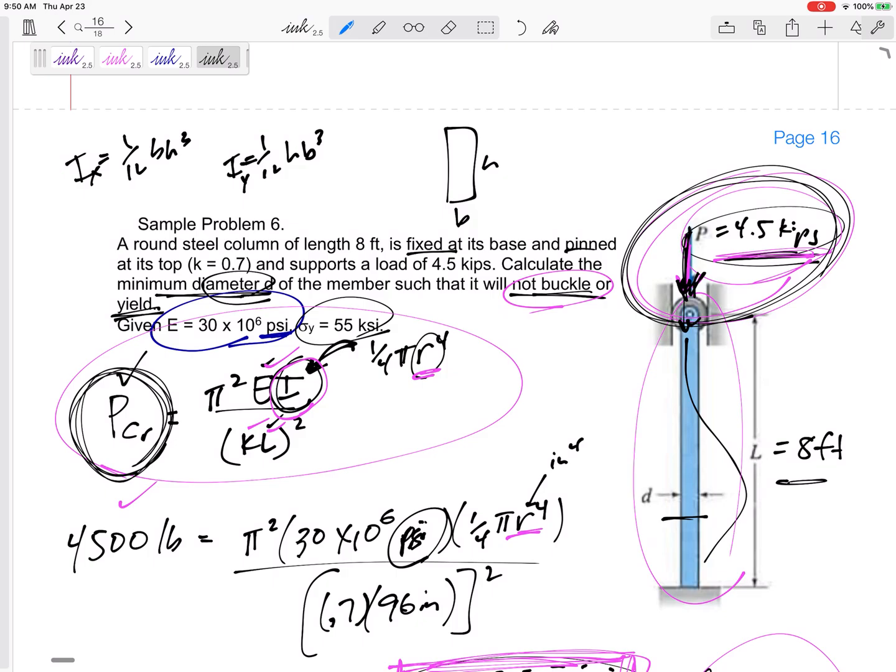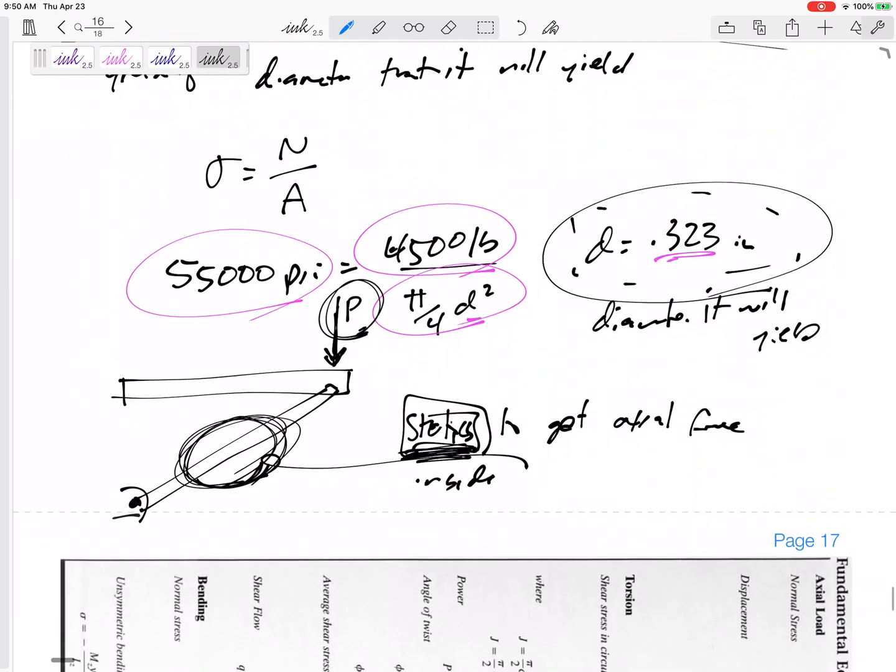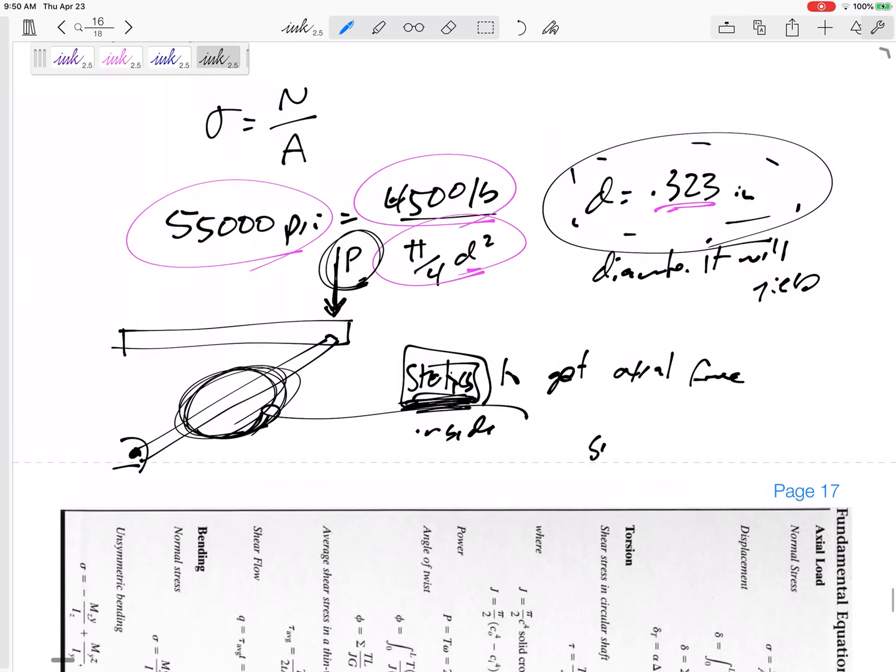The smaller I is the weak axis. Smaller I is the weak axis, larger I is the strong axis.